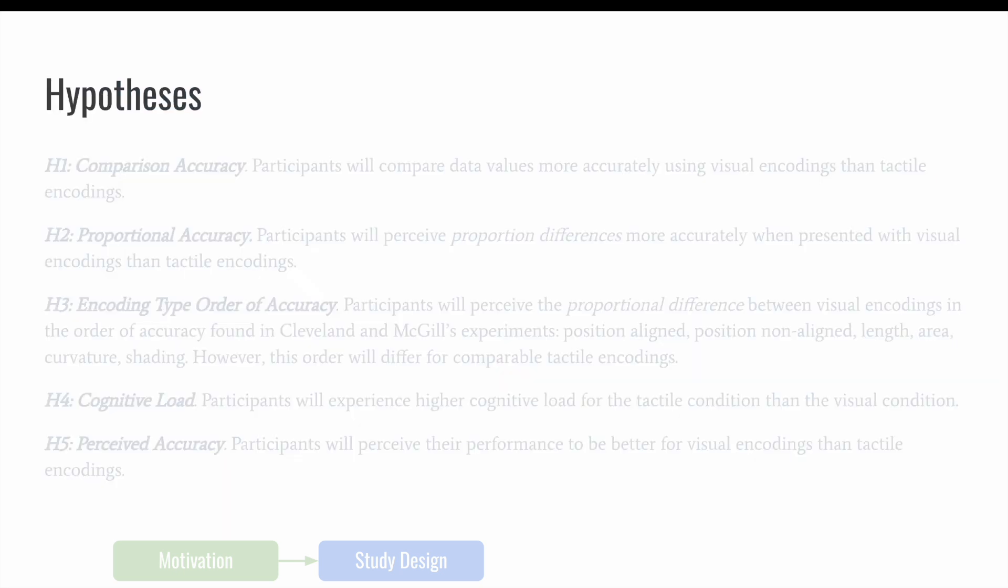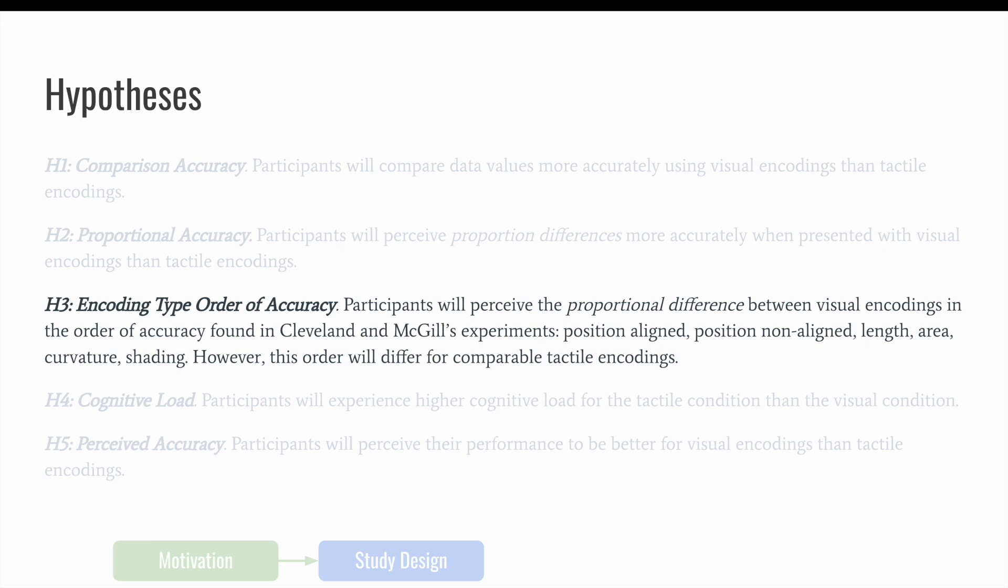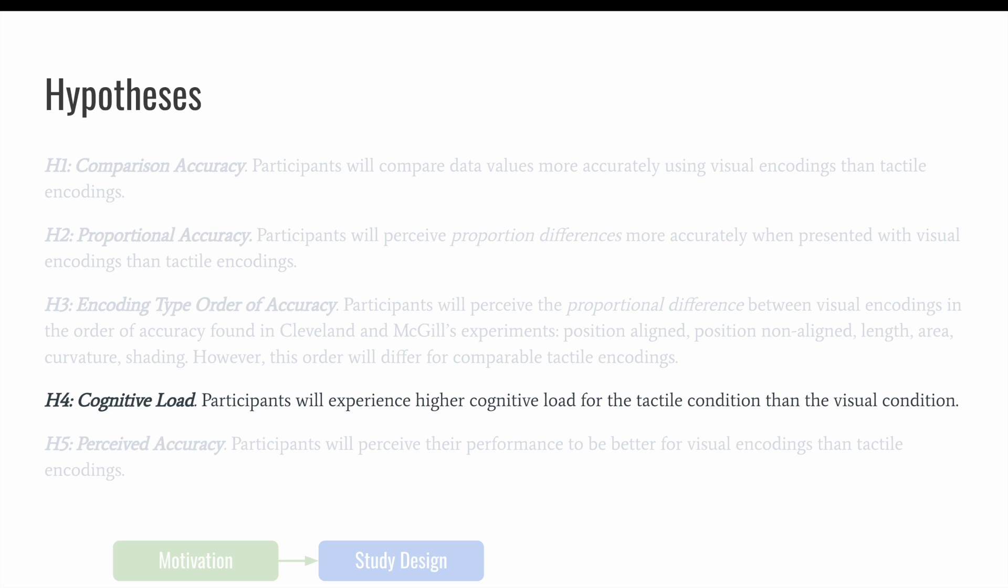In general, we hypothesized that participants would be more accurate with visual encodings than tactile, and they would perceive tactile encodings in a different order of accuracy than visual. They would experience higher cognitive load when using tactile encodings compared to visual. And finally, they would think that they were more accurate when using visual encodings.